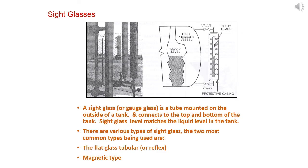Another type is sight glasses. A sight glass is a direct level measurement system. A sight glass or gauge glass is a tube mounted on the outside of a tank and connects to the top and bottom of the tank. Sight glass level matches the liquid level inside the tank. The two most common types are flat glass tubular or reflex, and magnetic type.